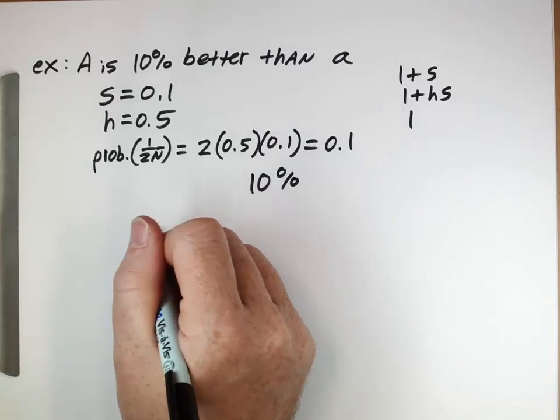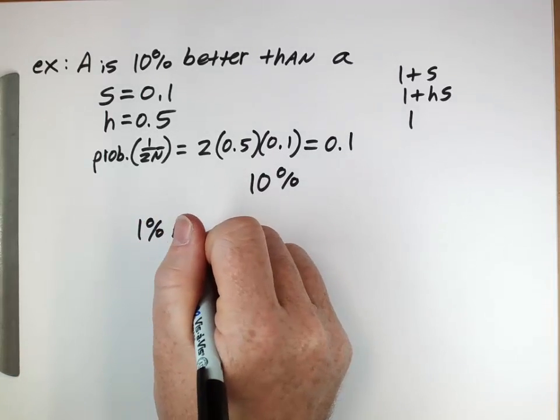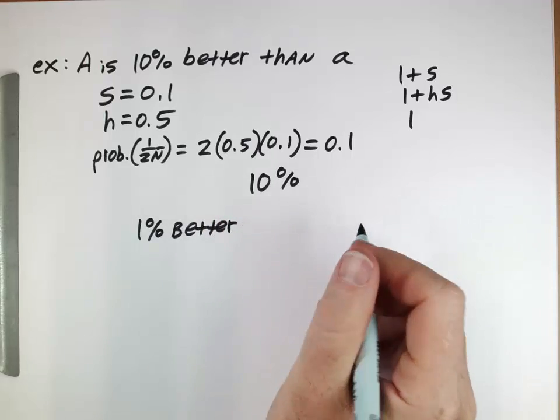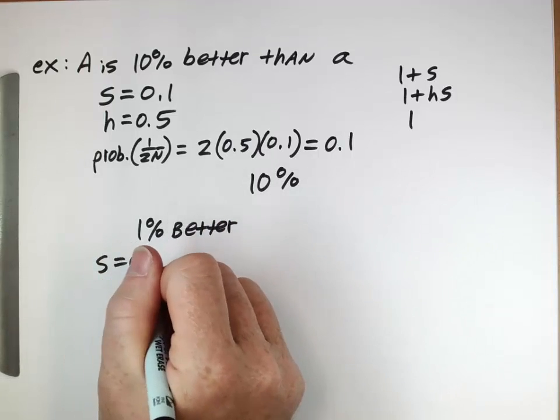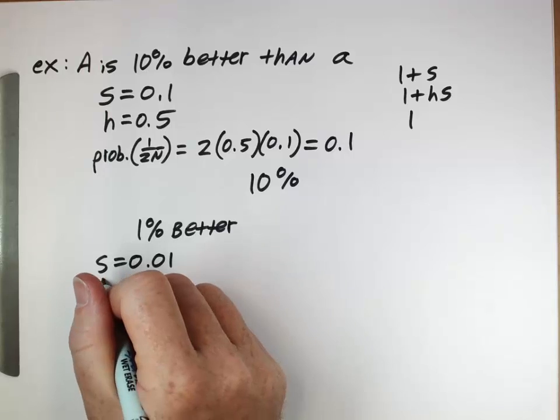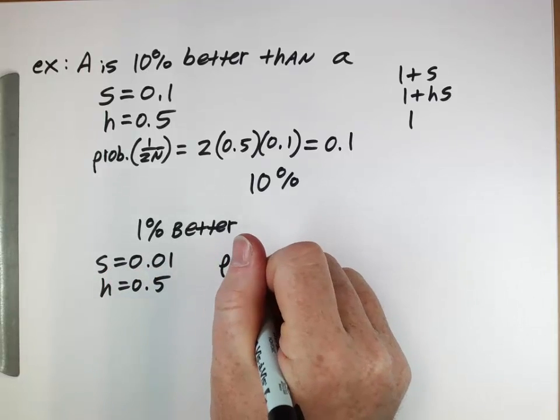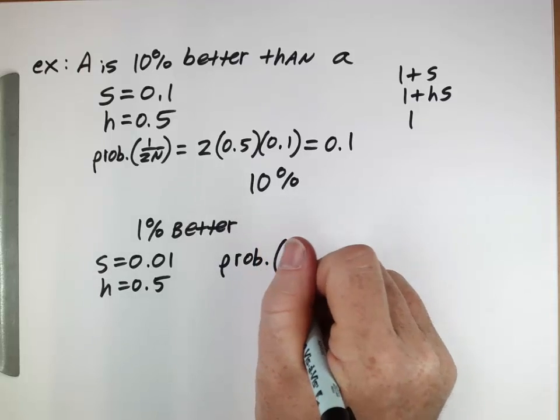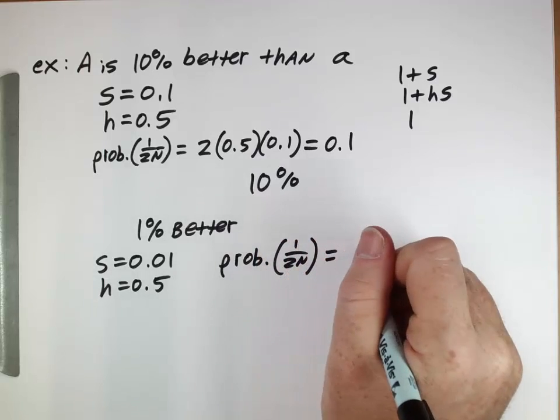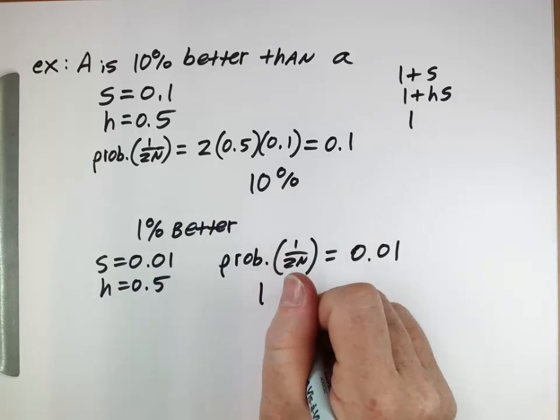What if A was 1% better? Now you would be using s of 0.01, same h. That probability would end up being 0.01, which is 1%.